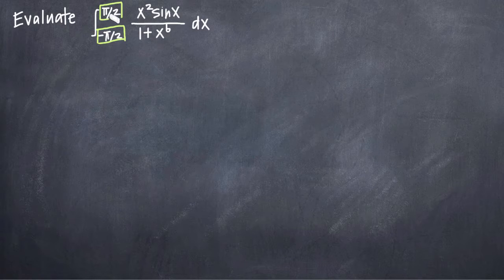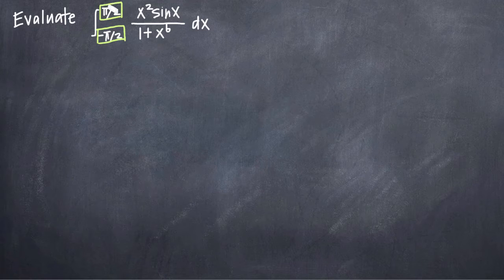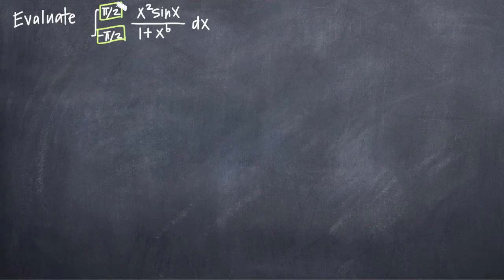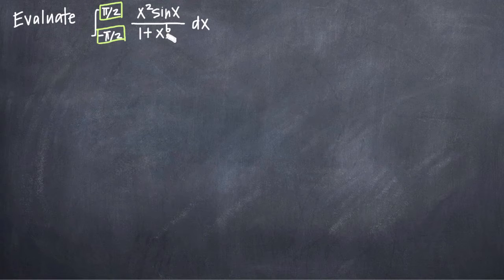Whenever you have the range negative a to positive a — where the lower value is the negative version of the upper value — you should consider checking whether your function is even or odd. When the range is negative a to positive a and the function is odd, you know immediately that the value of your definite integral is zero.